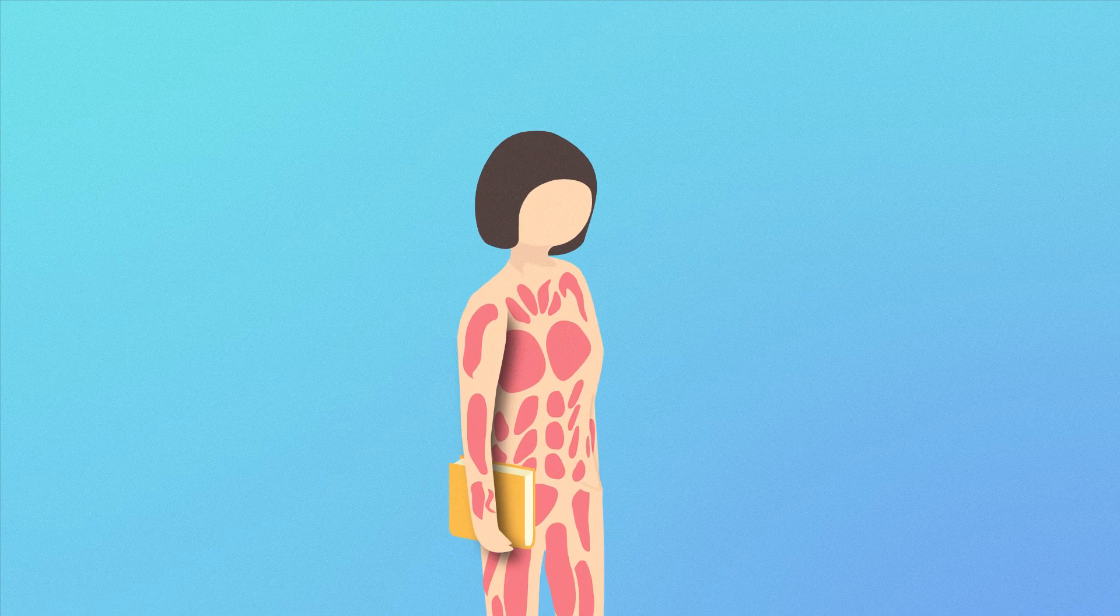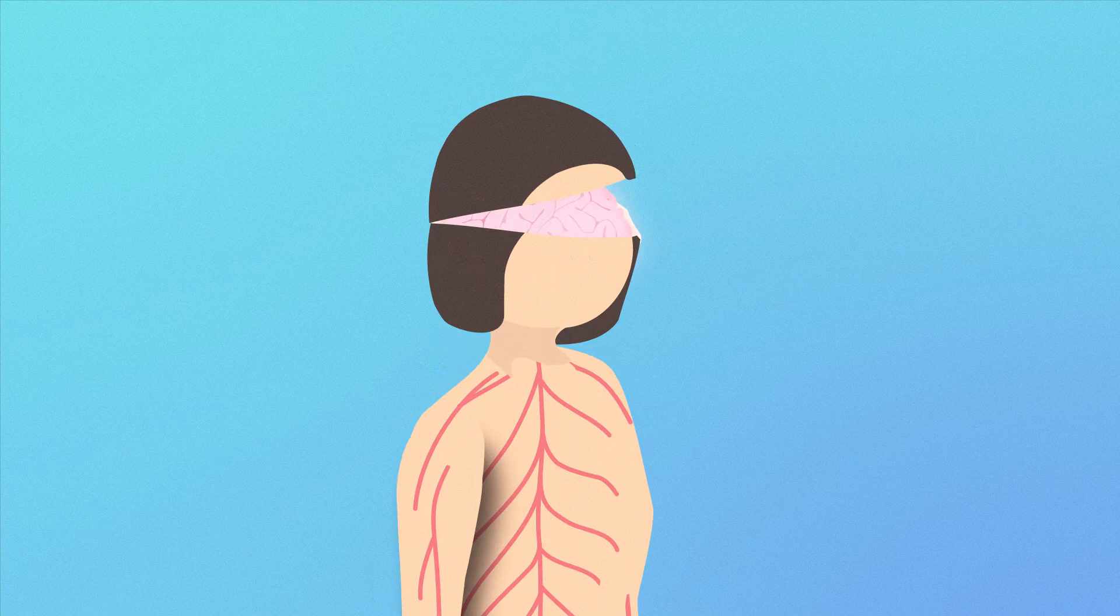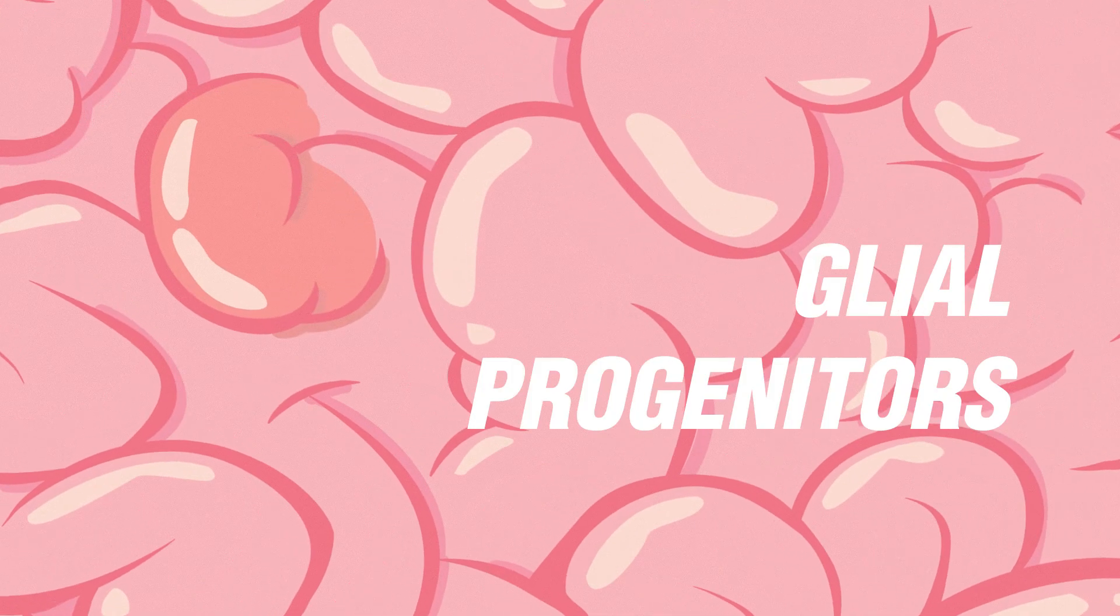Glioblastoma is the most frequent brain tumor. It originates in a cell type called glioprogenitors, and the life expectancy given to patients is 14 to 15 months.